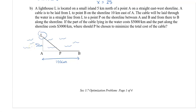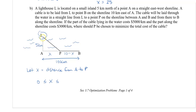Let x equal the distance from A to P. Then the distance from P to B is 10 minus x. The restriction is x ∈ [0, 10]: x = 0 means we lay the cable straight from L directly to B with no shore portion, and x = 10 means the cable goes from L straight down to A and then entirely along the shoreline for the full 10 kilometers.